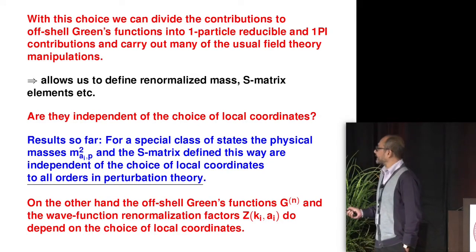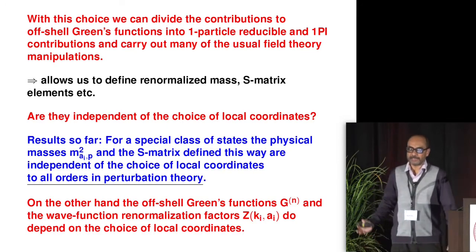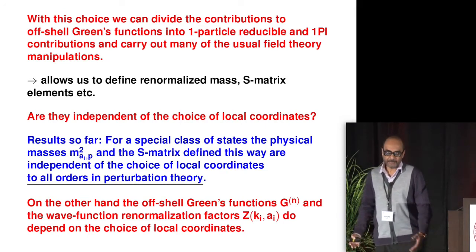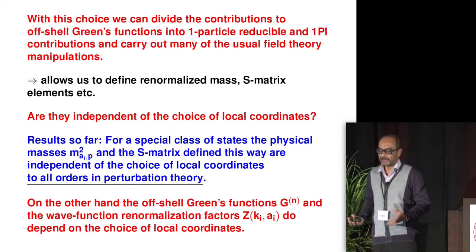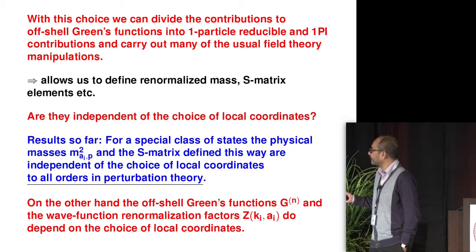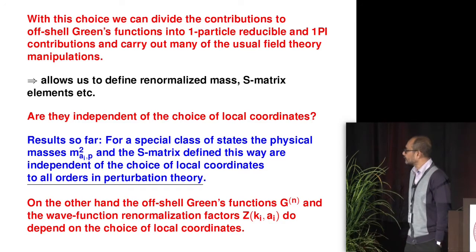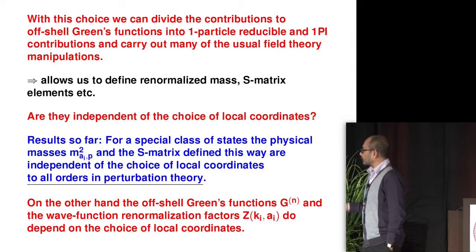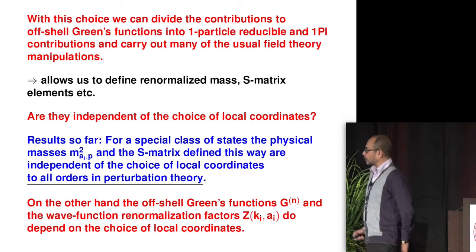The advantage of this gluing compatibility condition is that we can divide contributions to off-shell Green's functions into one-particle-reducible and one-particle-irreducible contributions. Any Riemann surface obtainable by gluing lower-genus Riemann surfaces is declared one-particle-reducible; only those that cannot be so obtained are declared one-particle-irreducible. One then finds that they satisfy exactly the same relations as in any usual quantum field theory. This allows us to define renormalized mass, S-matrix elements, etc., in the standard fashion. The big question is: are these independent of the choice of local coordinates?